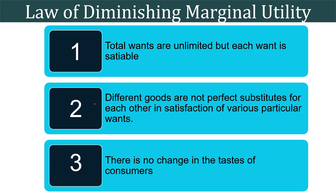The law is based upon three main facts. The first is that total wants of the consumer are unlimited but each want is satiable. As an individual consumes more and more units of a good, the intensity of his wants for the good starts declining, until a point is reached when the individual no longer wants any more of the good. This point is called the saturation point, and at this point the marginal utility becomes zero.